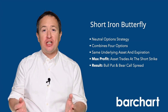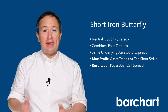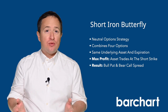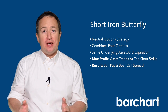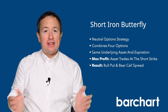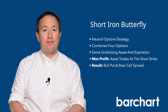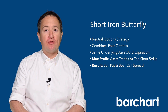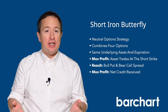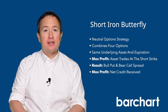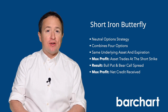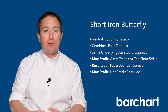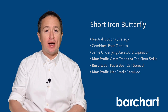The chances of the underlying ending at exactly the middle are very low, so that's why traders are often happy even if the underlying trades somewhere around it. The maximum profit on a short iron butterfly is the net credit received. The maximum loss is the difference between the middle strike and either of the outer strike prices, minus the net credit.